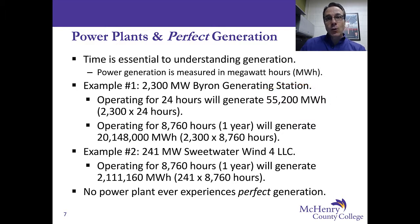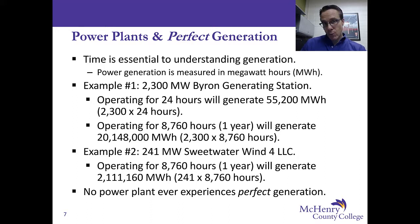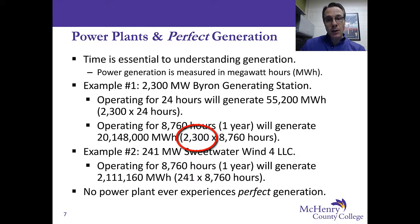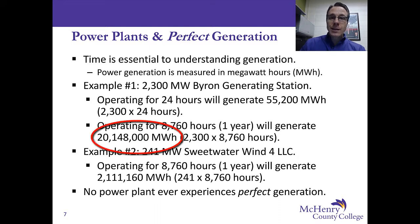We can extend this 24-hour day out over an entire year using the same procedure. Instead of using 24 hours — the number of hours in a day — we use 8,760 hours, which is the number of hours in a year. Running the Byron Generating Station at 100% for an entire year gives us a generation of 20,148,000 megawatt hours.